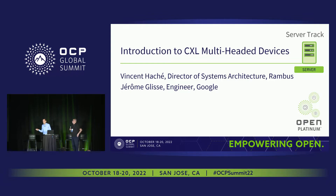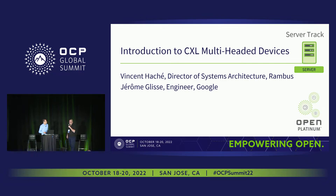My name is Vincent Hachet, I'm director of systems architecture at Rambus, working on their CXL data center products. And I'm Jérôme Glees, I'm a software engineer at Google.